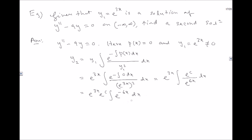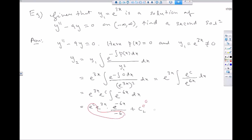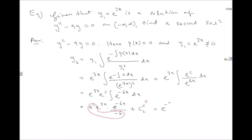Integrating e^(−6x) gives e^(−6x)/(−6). Multiplying by e^(3x), you get e^(3x) · e^(−6x)/(−6) = e^(−3x)/(−6). We can ignore the constant in front since we are just looking for one solution, so y₂ = e^(−3x).